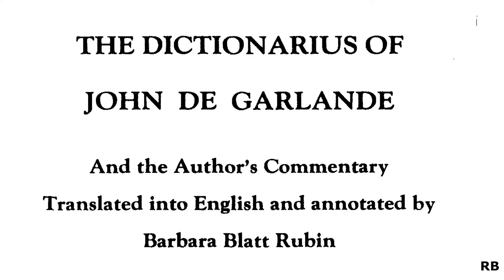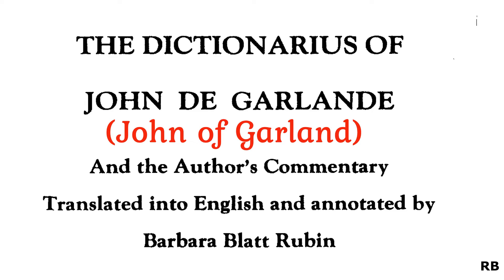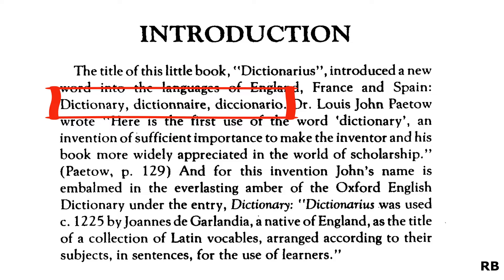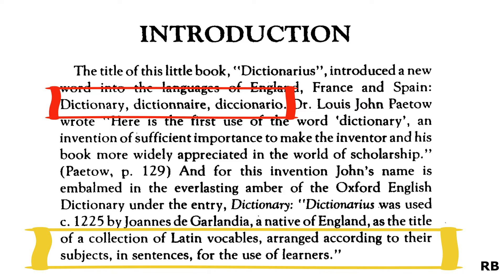But how did we get the word 'dictionary'? Well, the credit goes to John of Garland, a 13th-century poet, grammarian, and lexicographer. He wrote a children's textbook titled 'The Dictionarius of John of Garland' as a guide to Latin composition. Interestingly, the meaning of dictionary is also derived from what he intended to do — he basically prepared a collection of Latin words and expressions arranged according to their subjects in sentences for the use of learners. That's the reason why we call dictionaries dictionaries.